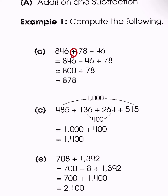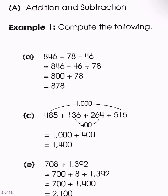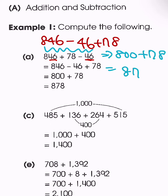Since we have addition and subtraction only, we can rearrange in the order that we want. Looking at 846 and 46, we see that the tens place and ones place overlap, so it's going to be really easy to subtract those two. So we rearrange it to 846 minus 46 plus 78, which automatically gives us 800 plus 78, equal to 878.